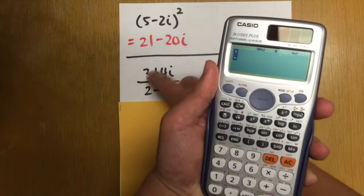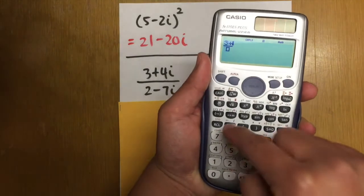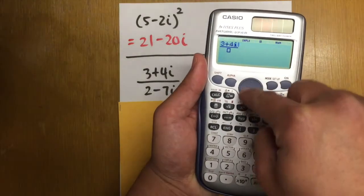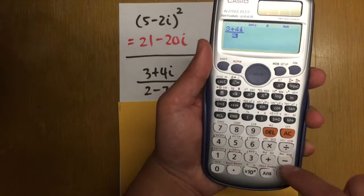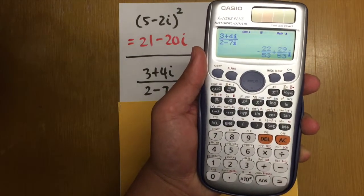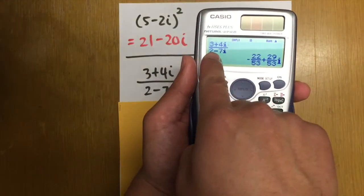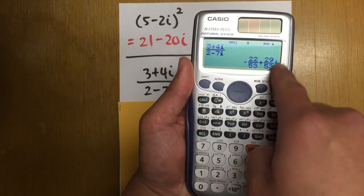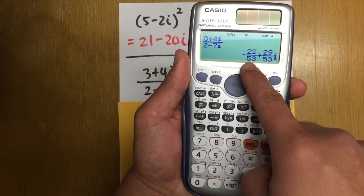So fractions. On the top, we have 3 plus 4i. Go down. For the denominator, we have 2 minus 7i. And then enter. And then you see that the calculator divides for you.